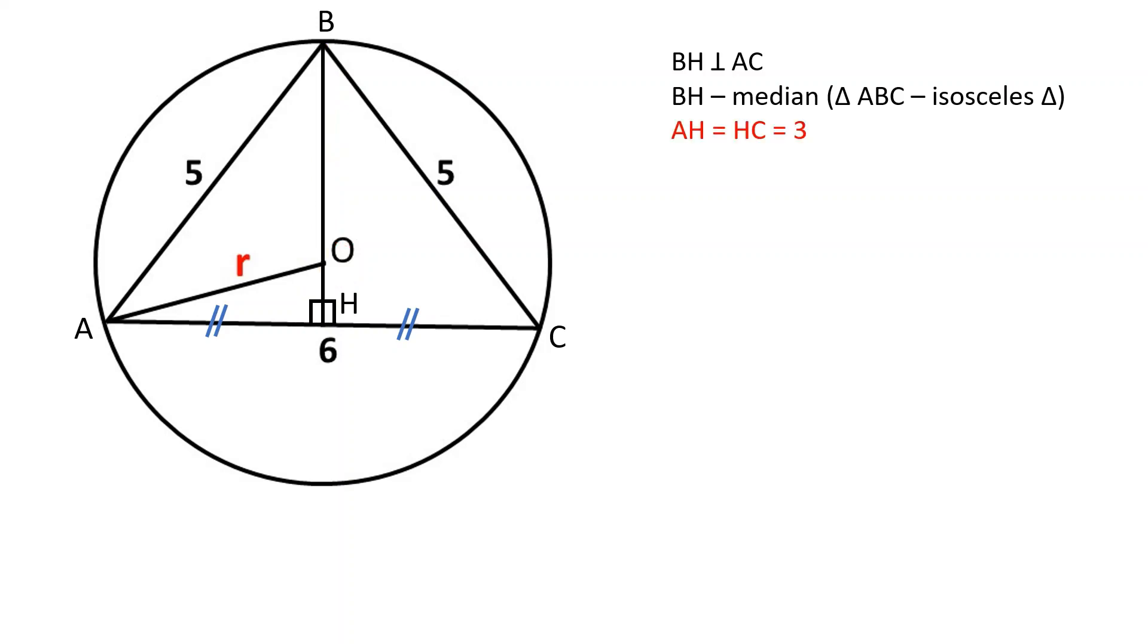AH equals HC and equals 3. Let's review triangle ABH. Since it's a right triangle, we can find BH using the Pythagorean theorem.